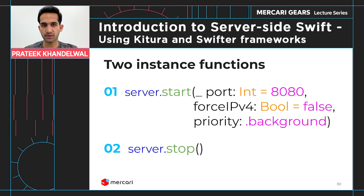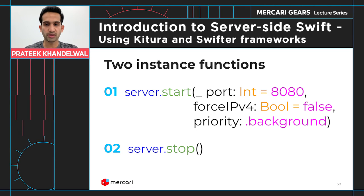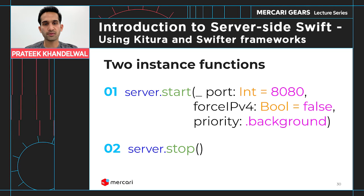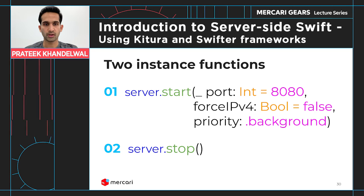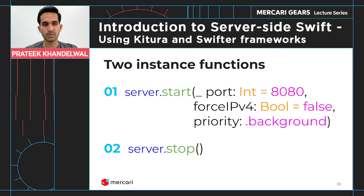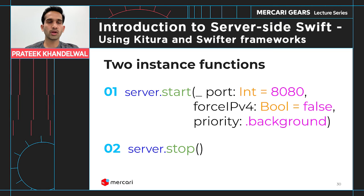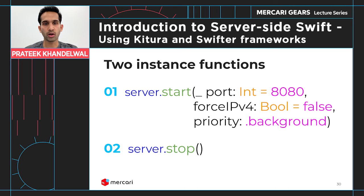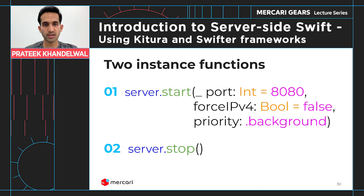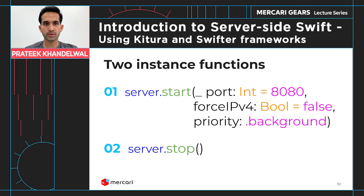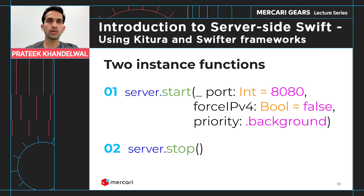There is an important difference: in Kitura we had both start and run, but in Swifter we only have start. The start function starts listening but returns immediately, similar to Kitura's start. In Kitura, the run function would block to keep the server alive. In Swifter, there is no run function, so you need to block the call yourself to prevent the server object from being released and stop serving incoming requests. This will be explained in more detail in the demo.